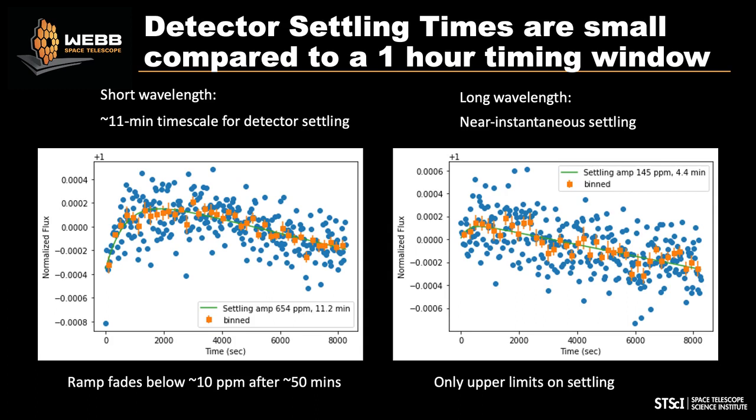The first thing we looked at was the detector settling timescale. With Hubble WFC3 there was a hook effect, but it's pretty small on JWST detectors. For the long wavelength on the right, we only have upper limits — it basically instantaneously settles. The short wavelength time series does have a little hook effect; this detector has the most charge traps. It has a settling timescale of roughly 11 minutes and an amplitude of 700 parts per million, but it settles quickly and can be well modeled with an exponential.